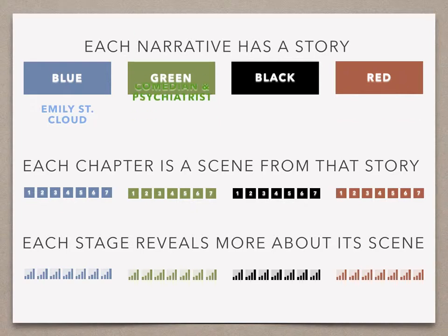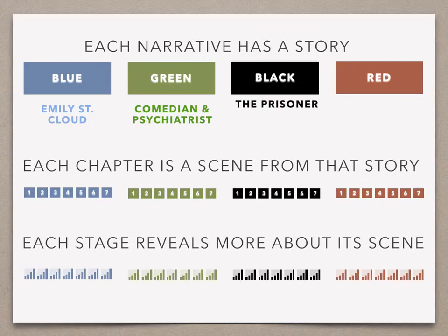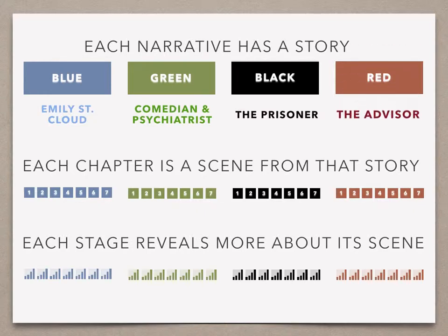The green narrative hosts a stand-up comedian talking to a psychiatrist, Dr. Chandra. The black narrative contains a prisoner who is sure that he's done something wrong and lit out for the island. He cannot, though, remember how he got there or why he was being punished. The red narrative speaks directly to the reader, evoking a sense that it is your world — that you, like the other characters, are working to figure out where you are and how you got there.